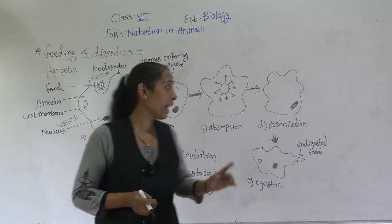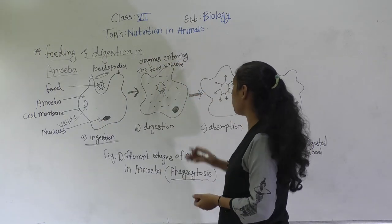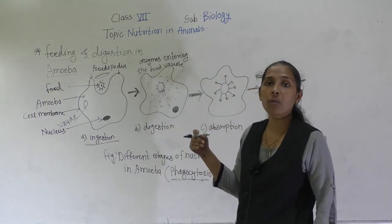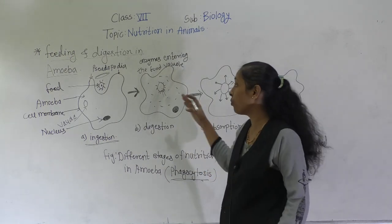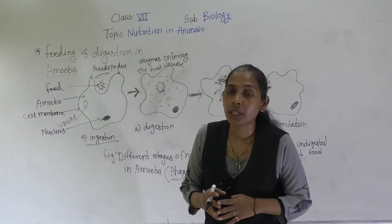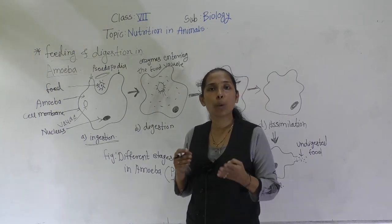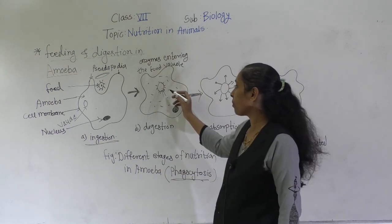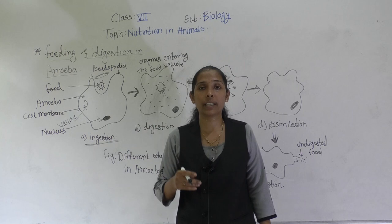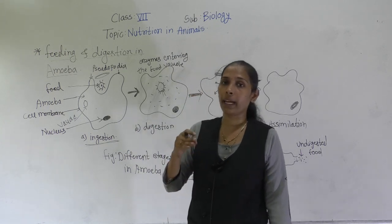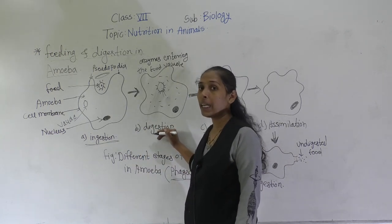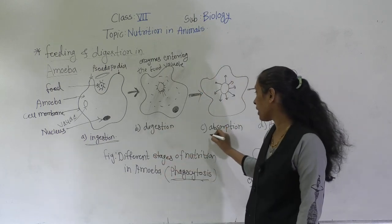With the help of different enzymes coming from the cytoplasm, the food gets converted into a simple and soluble form — the food is broken down into simpler substances. This is how the digestion process is completed in amoeba.